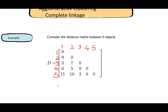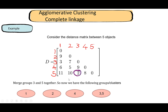We always cluster the groups that are closest to each other. Right now I have a group containing one, another containing two, and so on up to five. The smallest distance is two, so the groups containing three and five are the closest to each other. We'll be clustering three and five together, giving us the following groups: one, two, four, and the merged group {three, five}.